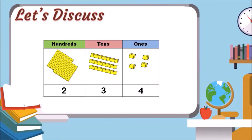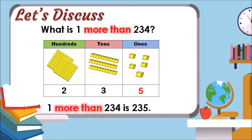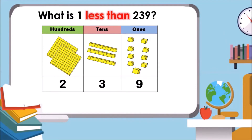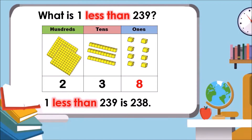Let's discuss. What is one more than 234? Let us add one more block to the ones place. One more than 234 is 235. What is one less than 239? Let us take away one block from the ones place. One less than 239 is 238.